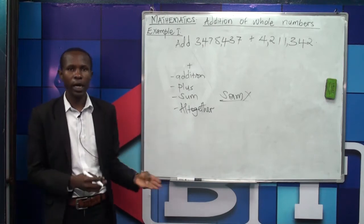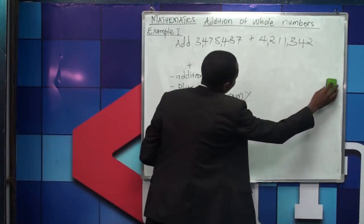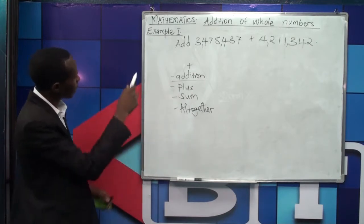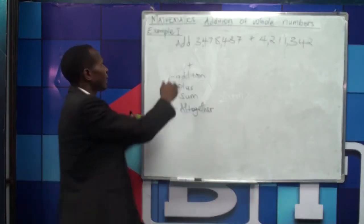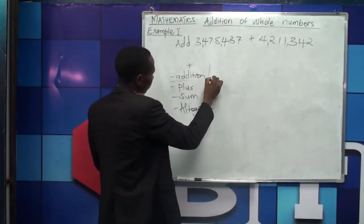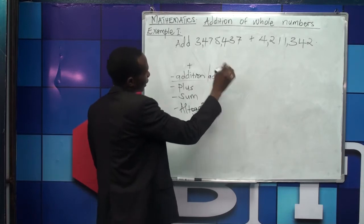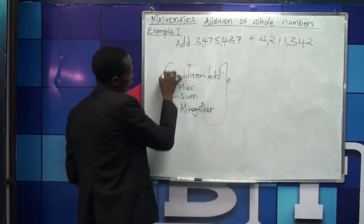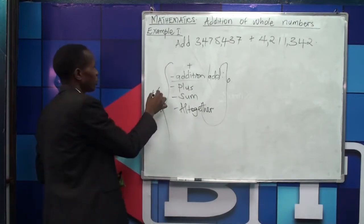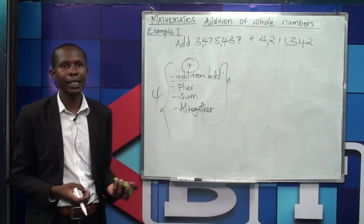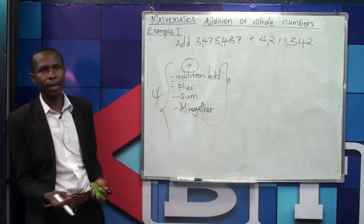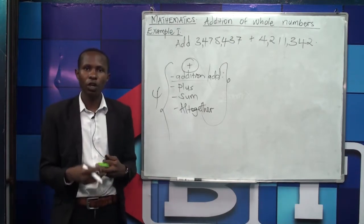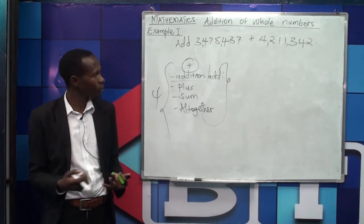We also have the phrase 'all together,' which in most cases refers to addition. So all four words — add, addition, plus, and all together — mean the same thing. Once you find them in mathematics, just know we are going to deal with addition of numbers.